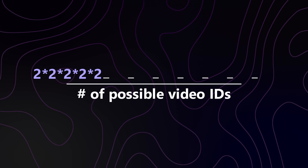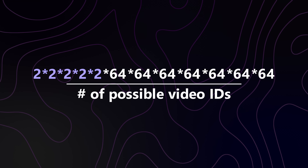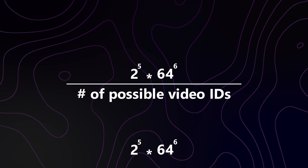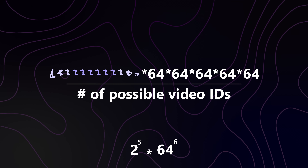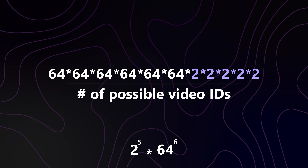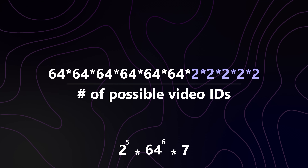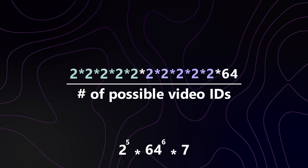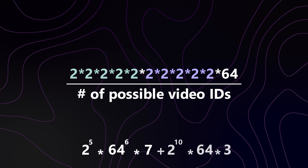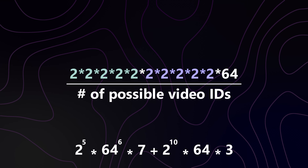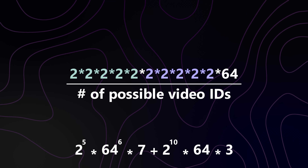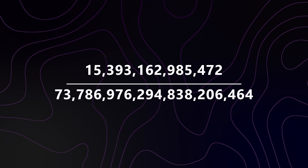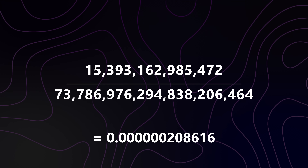There are 11 total characters in the video ID, and the other characters can be anything — 64 choices in each of the six remaining slots. This gives us 2 to the 5th times 64 to the 6th ways that any five-letter word can occur. It can also occur in 7 different positions within the ID, so we multiply by 7. We also need to account for the word appearing twice, which can happen in 3 ways, each using 10 of the 11 slots: 2 to the 10th times 64. Multiplying it all out gives us more than 15 trillion, but dividing by 73 quintillion gives an extremely small chance that any given video ID contains a specific five-letter word.